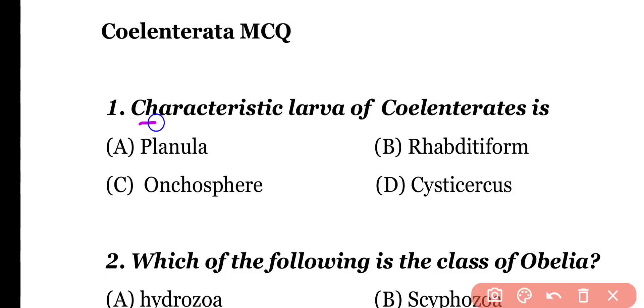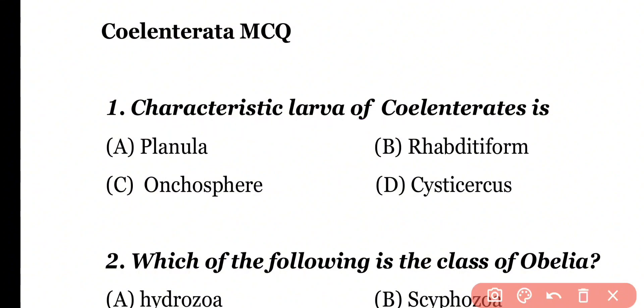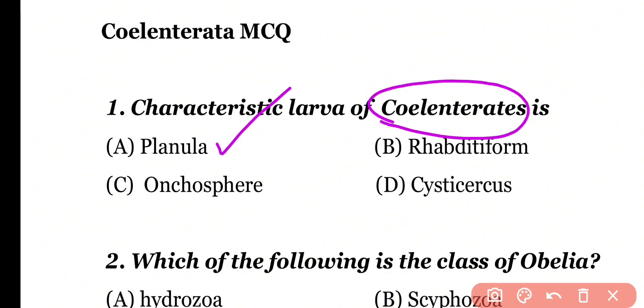Question number 1: The characteristic larva of Coelenterata is: Planula larva, Rhabdite form, Onchosphere, or Cysticercus. Correct answer is option A. The characteristic larva of Cnidaria or Coelenterata is Planula larva.